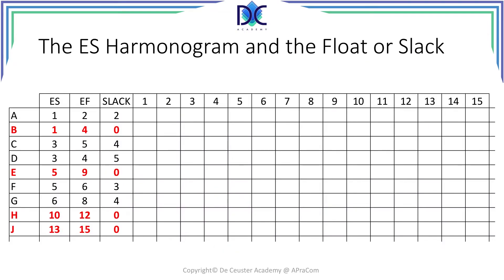Here we have that information but only related to the early start and early finish — we already did this before in the previous session. So activity A starts from period 1 till 2 with a slack of 2. Activity B has no slack; it's on the critical path from period 1 to 4.